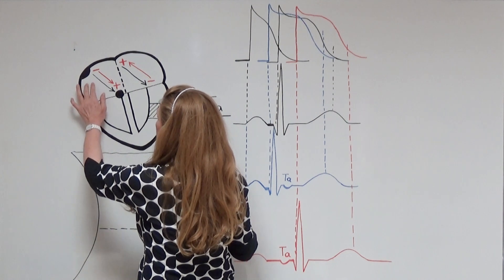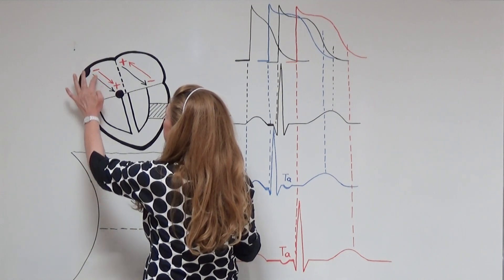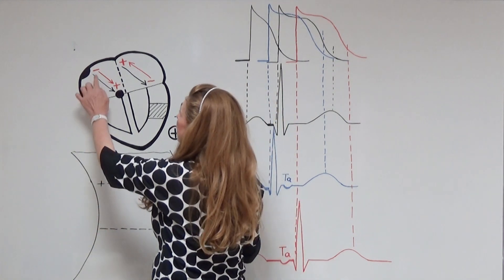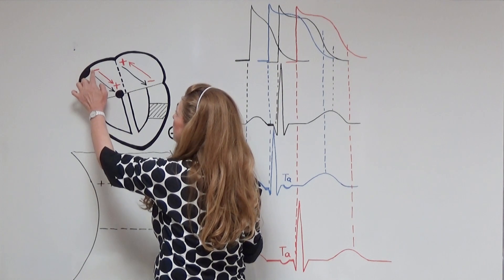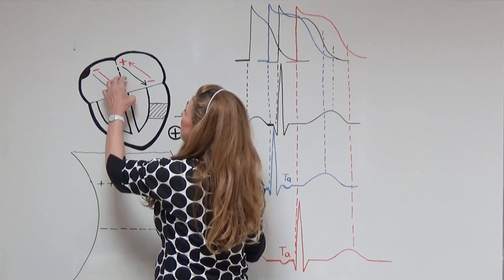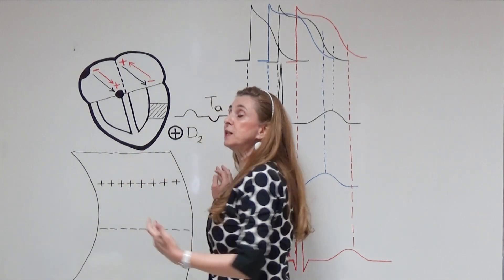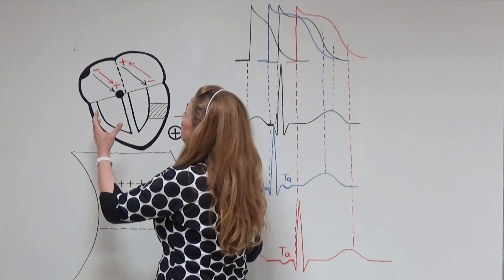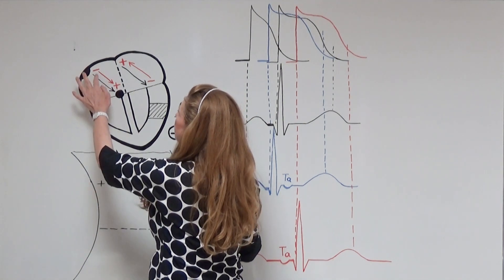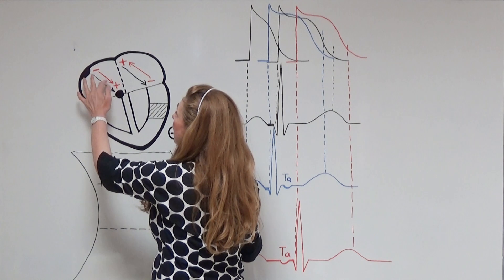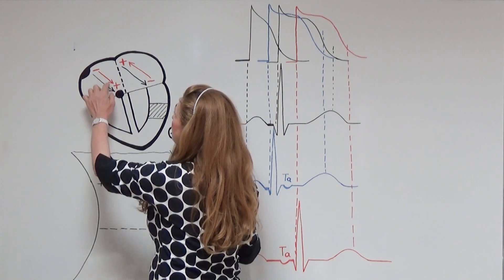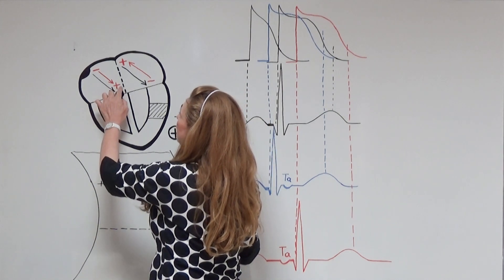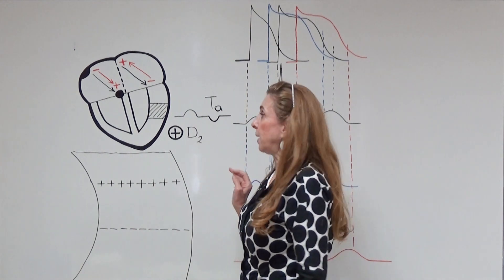The first atrial cells to depolarize are the cells in the neighborhood of the sinoatrial node. When they depolarize, their outer surfaces become negatively charged, while the other cells closer to the AV node are still at resting membrane potential and positively charged on the outside. This results in the formation of a dipole, which we can express as a vector — the red arrow, with its tip pointing to the positive end of the dipole.